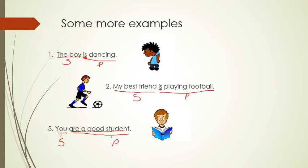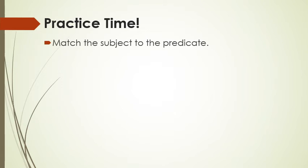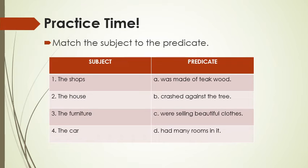Now it's practice time. I request you all to get ready with your pencil and a notebook so you can jot down this question and try to solve it. Here is the question: Match the subject to the predicate. We have two columns — in one column we have the subject: 1. the shops, 2. the house, 3. the furniture, 4. the car. In the predicate column we have: A. was made of teak wood, B. crashed against the tree, C. was selling beautiful clothes, D. had many rooms in it.